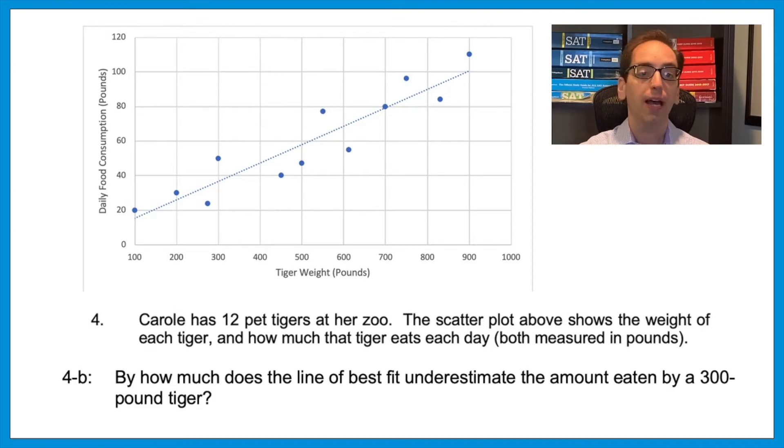And this stresses the point for the line of best fit questions. An estimated value or a predicted value is taken from the line, not the dot. So the estimated value here would be about 58, not 45. 4b: By how much does the line of best fit underestimate the amount eaten by a 300-pound tiger? So now let's go to 300 on the x-axis. Following it up to the dot, the dot is at 50. That means the actual tiger there was eating 50 pounds. But we want to go to the line to see the estimated value. That would be about 37, 38. So that means the line underestimates the actual tiger by 12. The answer is 12.